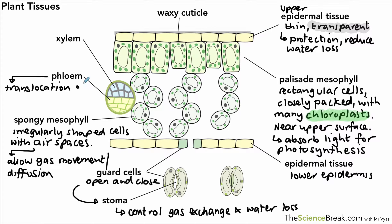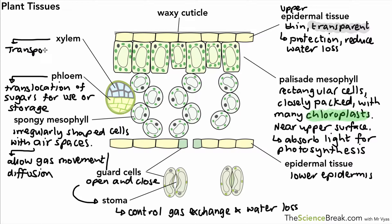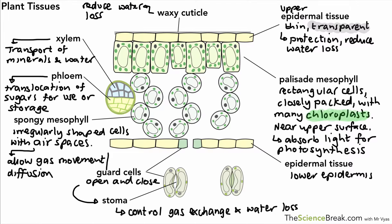The phloem tissue is responsible for the translocation of sugars to other parts of the plant, either for use in respiration or for storage. The xylem tissue is made up of xylem cells and is responsible for the transport of minerals and water up the plant; it also has a role in supporting the plant. The waxy cuticle is a layer of waxy material that is very useful for reducing water loss and making the leaf waterproof, working in combination with the upper epidermis.